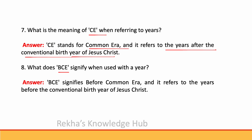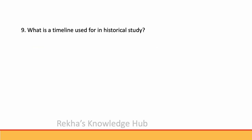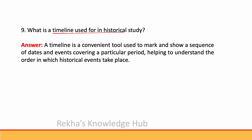What is a timeline used for in historical study? A timeline is a convenient tool used to mark and show a sequence of dates and events covering a particular period, helping to understand the order in which historical events take place.